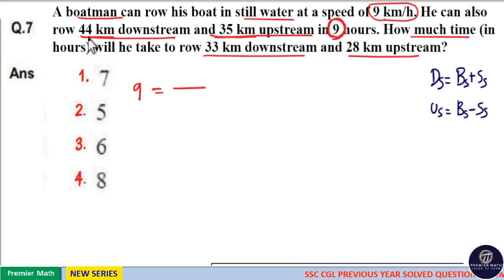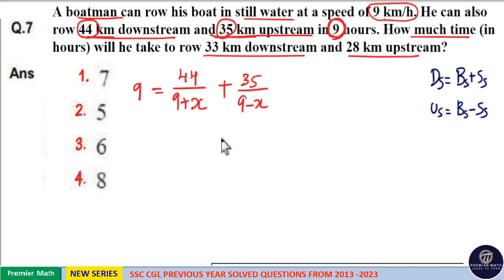Here downstream distance is 44 km. Downstream speed means speed of boat is 9 plus speed of stream, I will take it as x. Now upstream distance is 35 km. Upstream speed means 9 minus x. Now we need 9. These two parts should form 9.